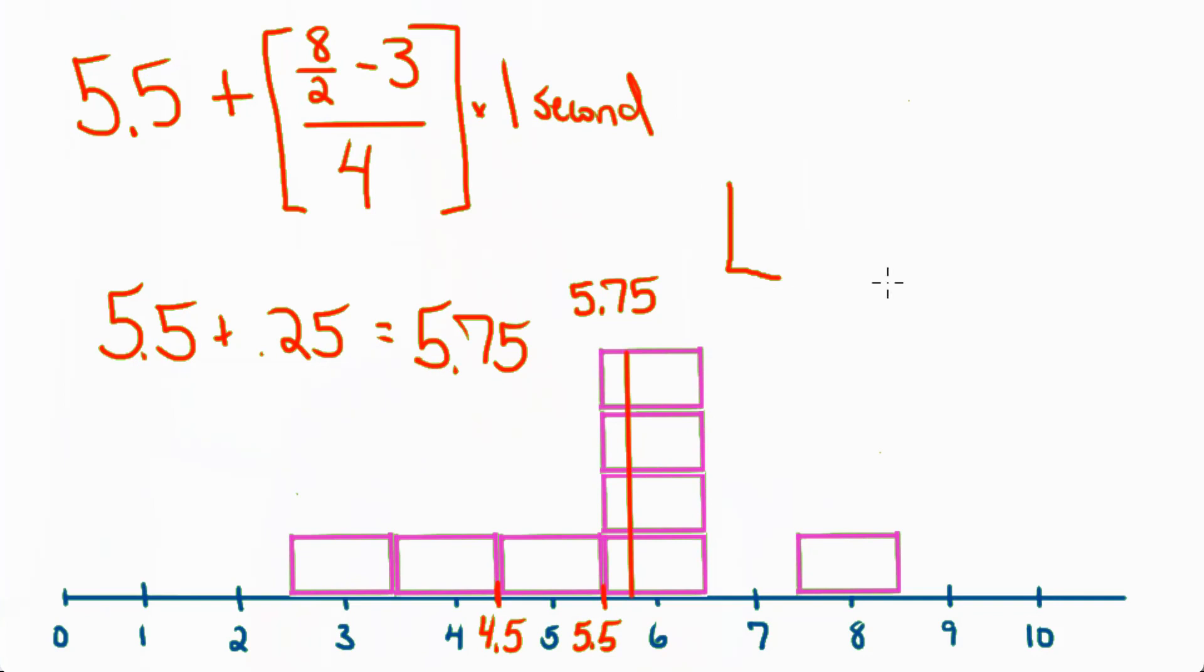We had the lower limit of the median L plus the fractional portion which is n divided by 2 minus the frequency of scores that are below the lower limit of the median. You've already counted those. And then you divide that by how many scores you're dividing up. That's the frequency of scores at the median, f. And then we multiply that times our class interval, h. So this is the formula for the interpolated median.